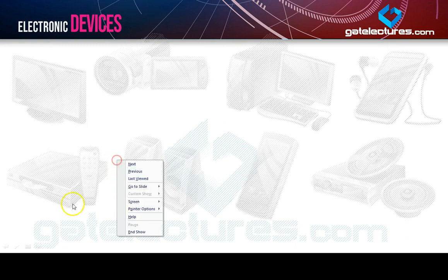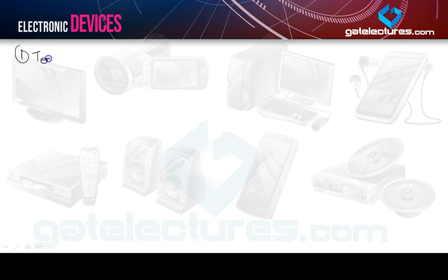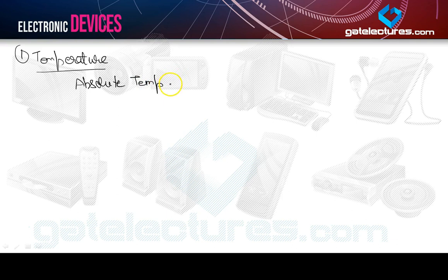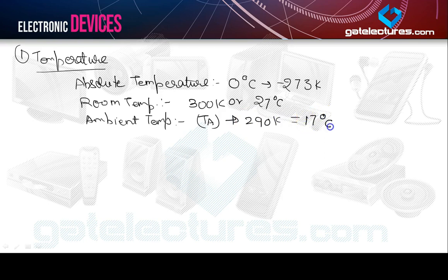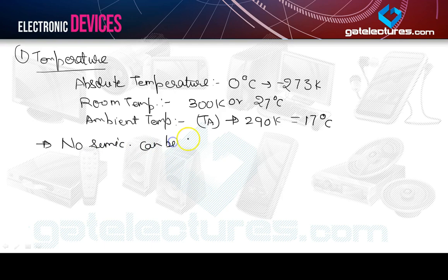Let me start with some basic terminologies. Absolute temperature — room temperature is 300 Kelvin or 27 degrees Celsius. Then we have ambient temperature, denoted by T_a, which is 290 Kelvin, equal to 17 degrees Celsius.